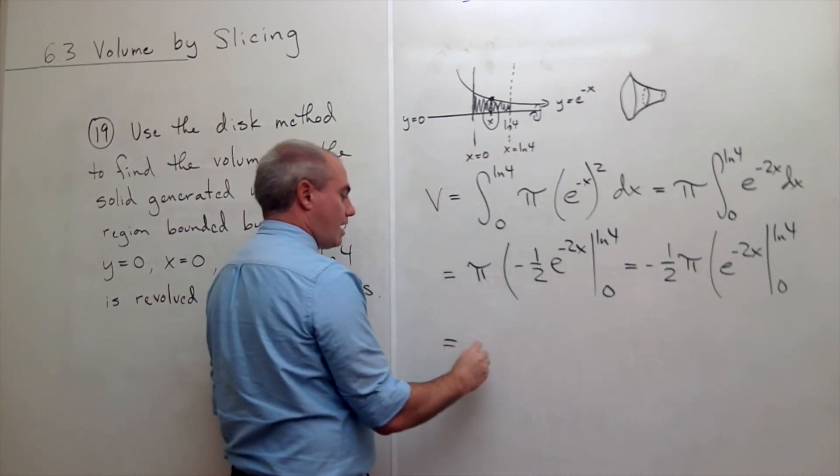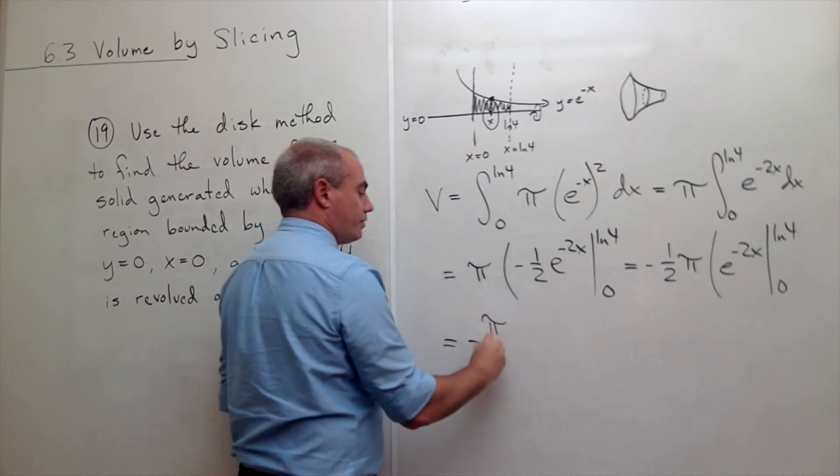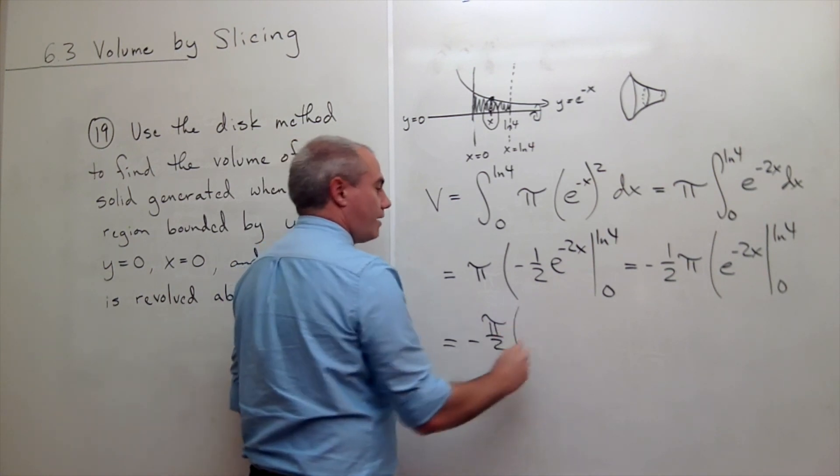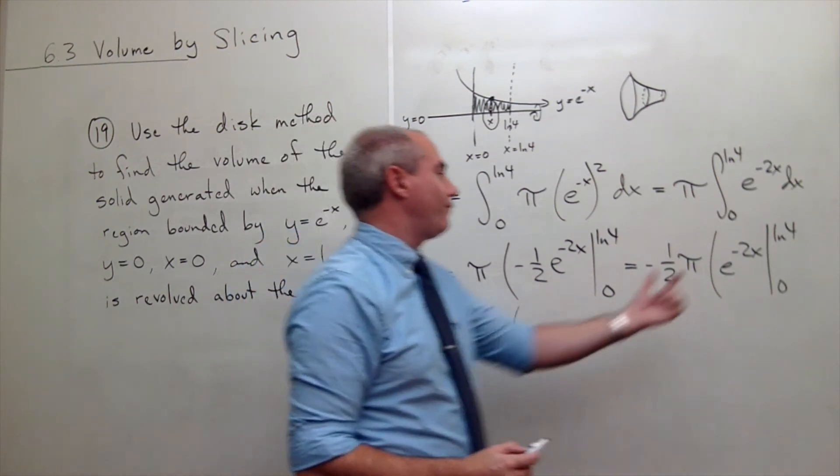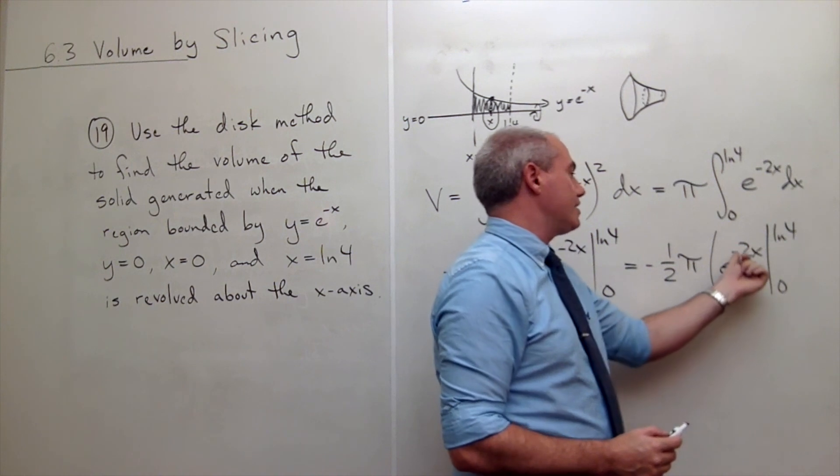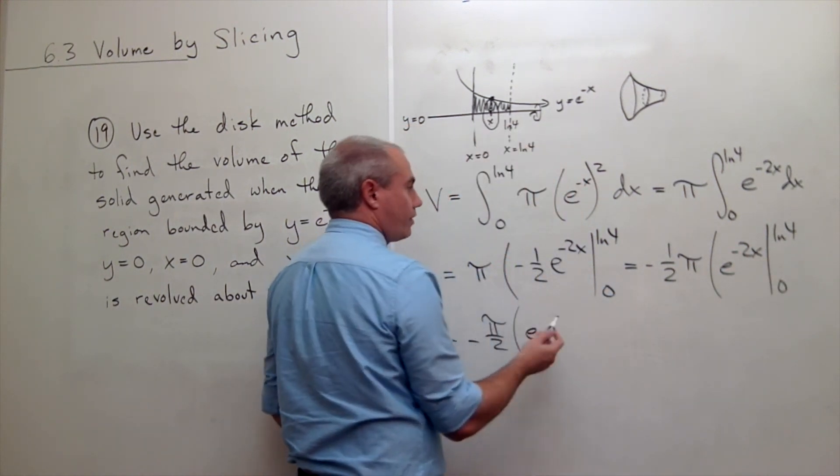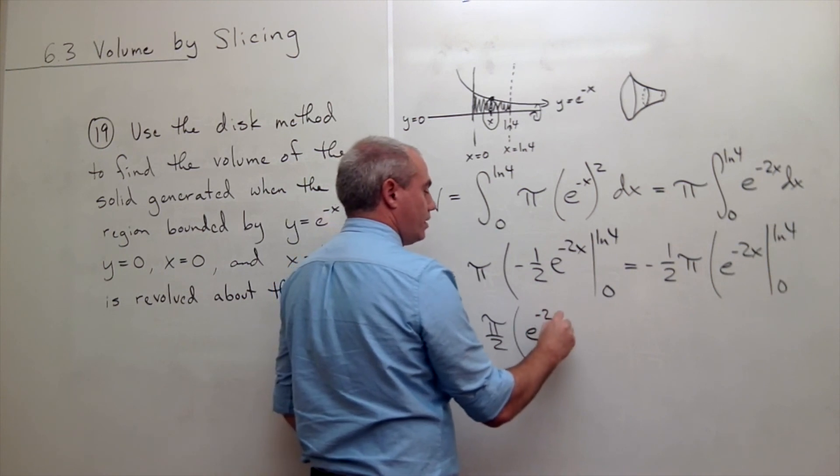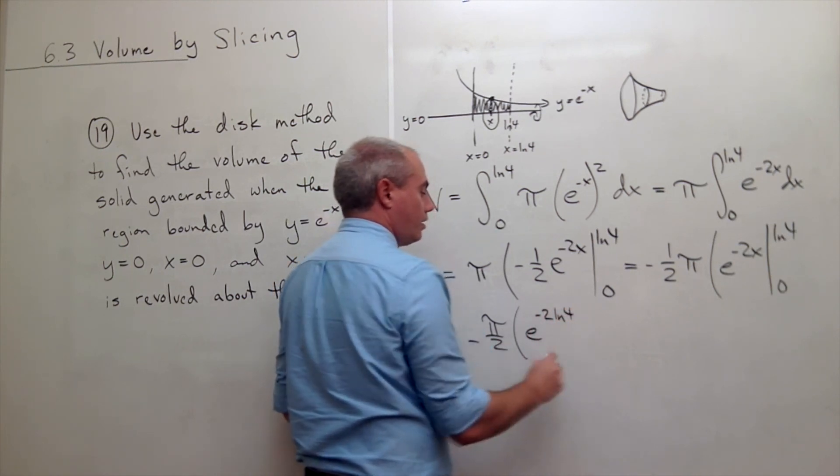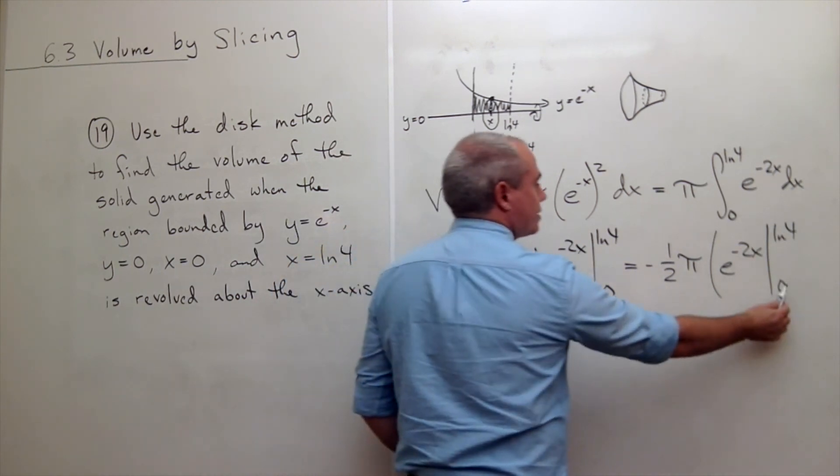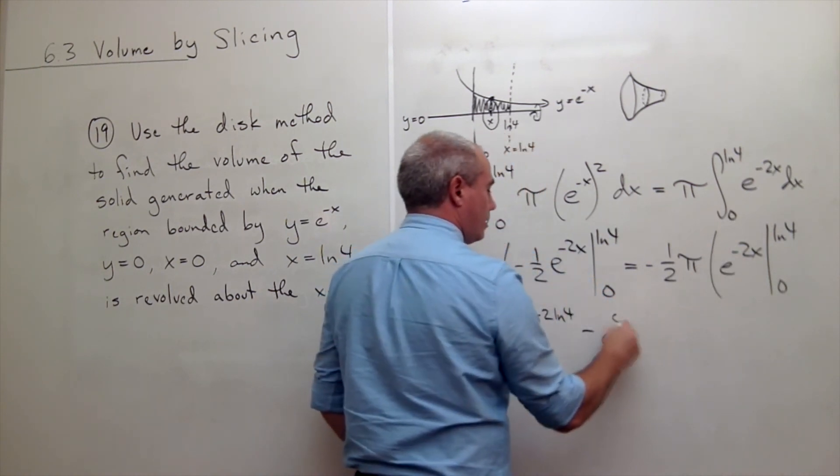So I get minus pi over 2 times, if I plug in ln of 4, I get e to the negative 2 times ln of 4. Let me just write that in for now. e to the negative 2 ln 4 minus, plug in 0 and I get e to the 0.